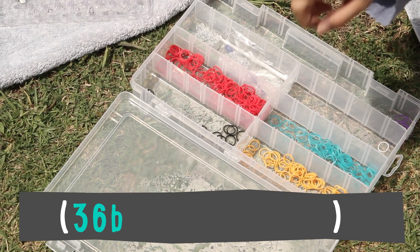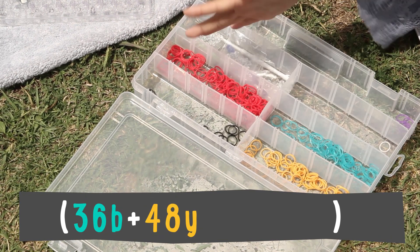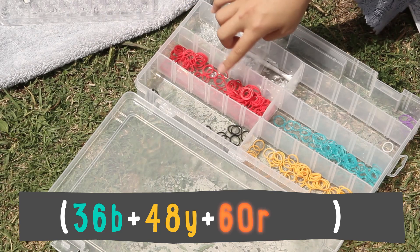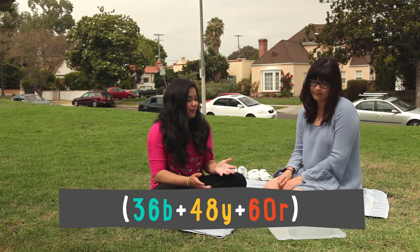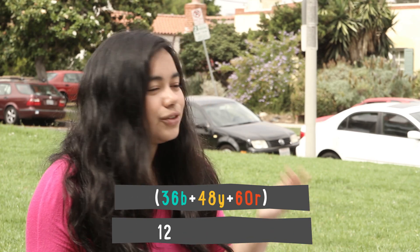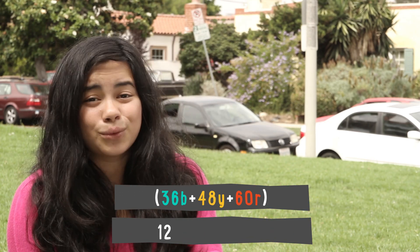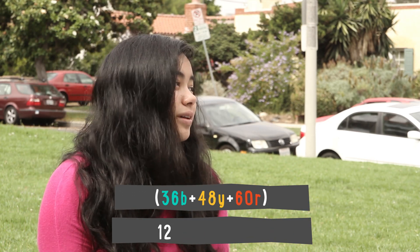Okay, so you have 36 blue bands, 48 yellow bands, a handful of black ones, 60 red ones, and you had one white one. I can make 12. 12 is also a factor of 36, 48, and 60, and this way everyone gets one.